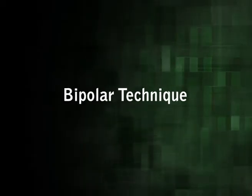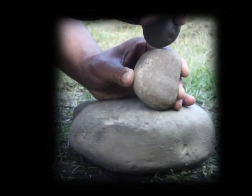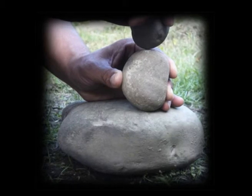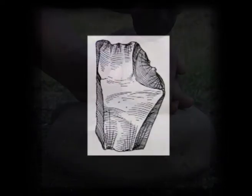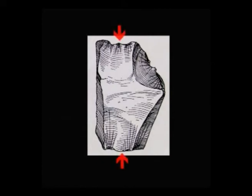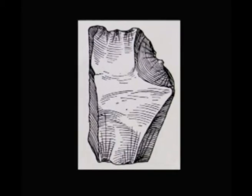Now let us come to the next point: bipolar technique. This technique of flaking is less common, but it is considered economical in the sense that with a single blow two flakes could be detached simultaneously. For this, the core is placed upon another hard rock and struck with a hammer on the upper free end of the core. Due to the rebound of the force from the underlying rock and the force of the hammer blow on the upper end, two flakes — one from each opposite end — have been removed on the same face of the core. The presence of radiating features on the same face of the opposite ends of the core is the characteristic of the bipolar technique.